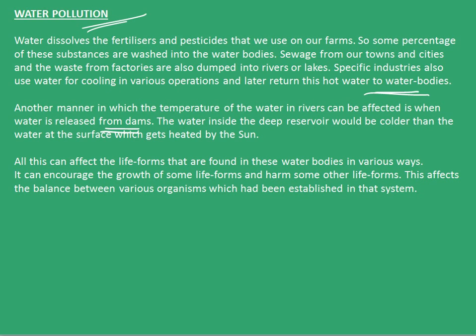Another manner in which the temperature of the water in rivers can be affected is when water is released from dams. The water inside the deep reservoir would be colder than the water at the surface which gets heated by the sun. All this can affect the life forms found in these water bodies in various ways — it can encourage the growth of some life forms and harm others, affecting the balance between various organisms established in that system.